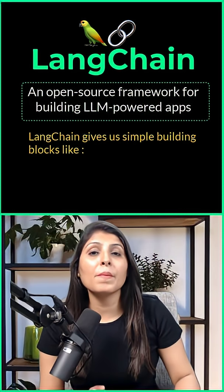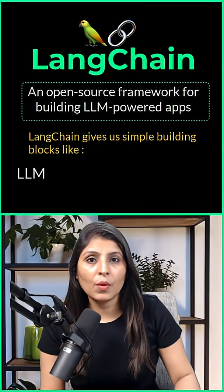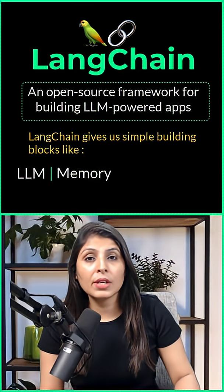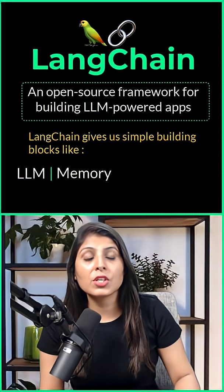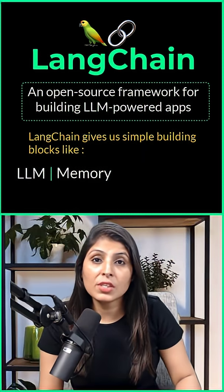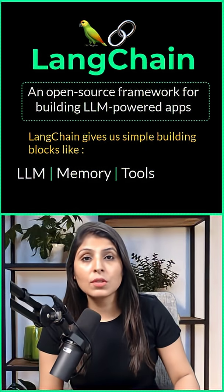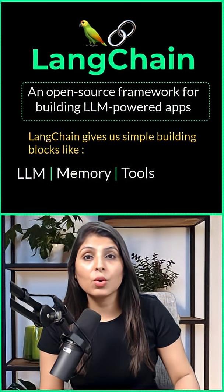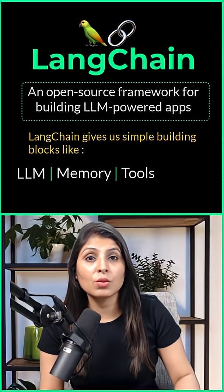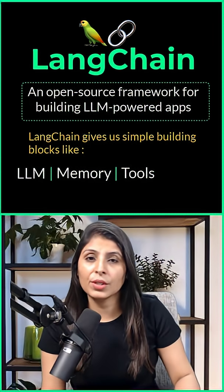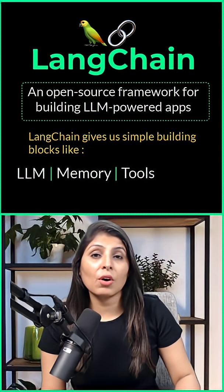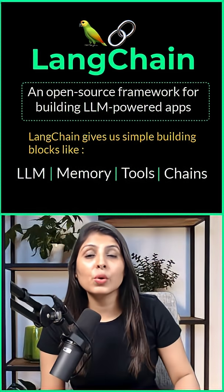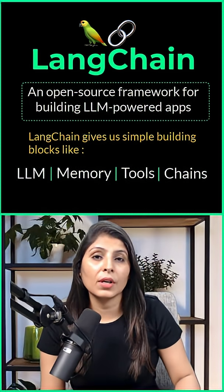Langchain gives us simple building blocks like LLM, which act as the brain of the AI app. Next we have memory, using which our app can remember past conversations. And then there are tools — tools are external functionalities which we can add, like one tool can search the web or another tool can fetch the weather details. And then there is the concept of chains. Chains connect everything together so that our app can work properly.